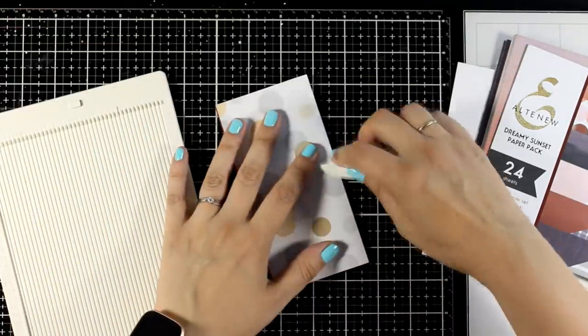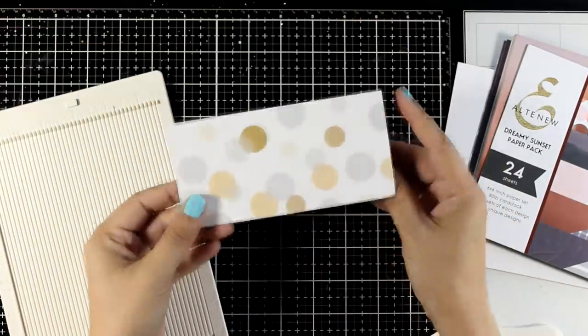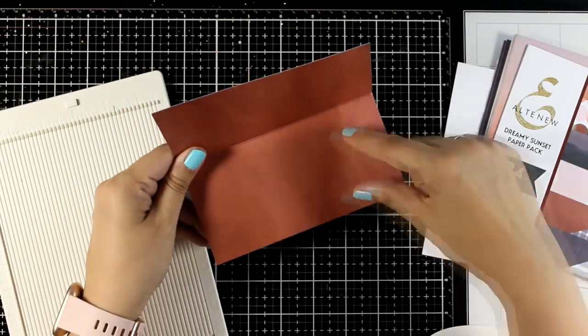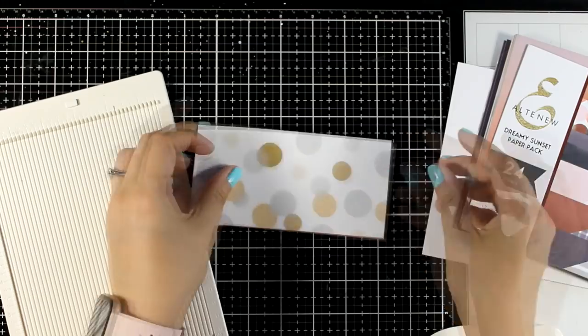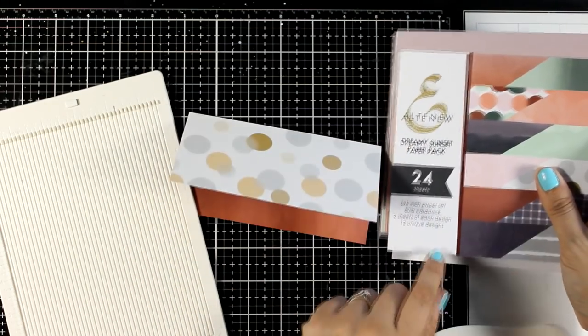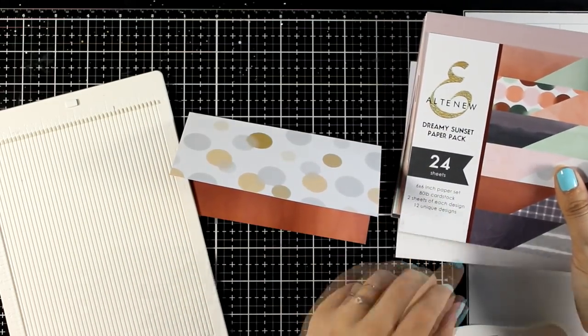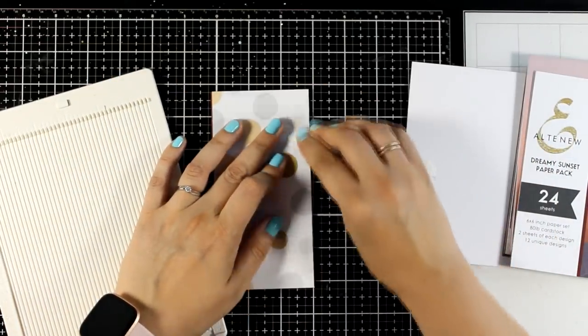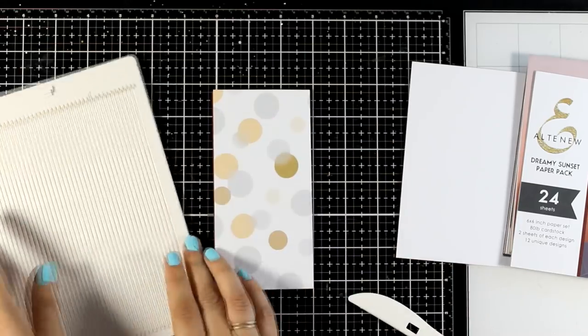Depending on the paper pad that you use you may end up having a blank inside. In my case I do have some color inside but this is not a problem. I will show you how easy it is to fix that. Now the good thing about using Altenew paper pads is that they are 80 pounds so it is nice and sturdy just like light cardstock and it makes a great card base.